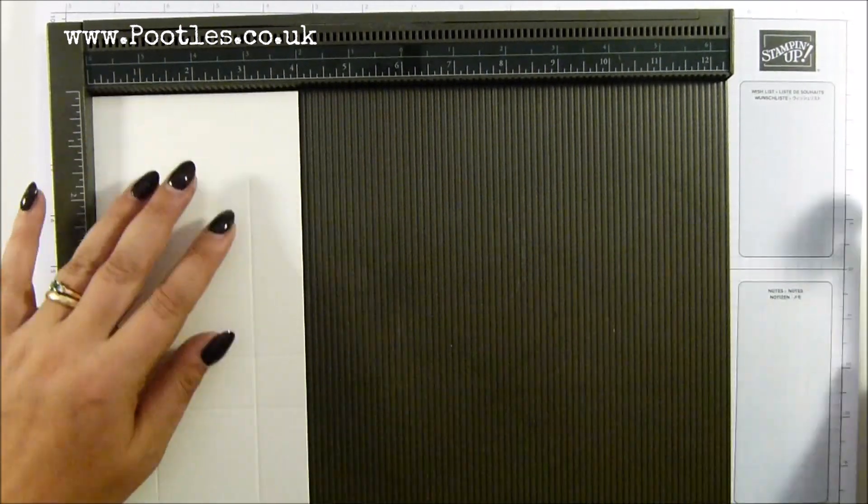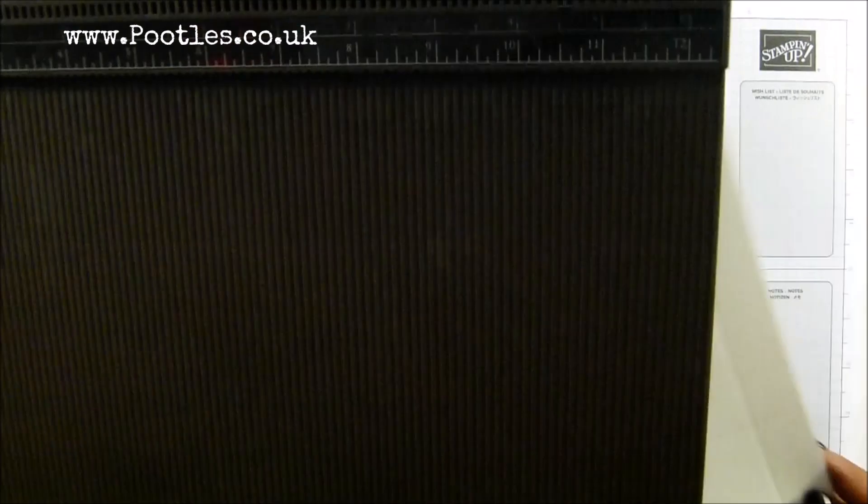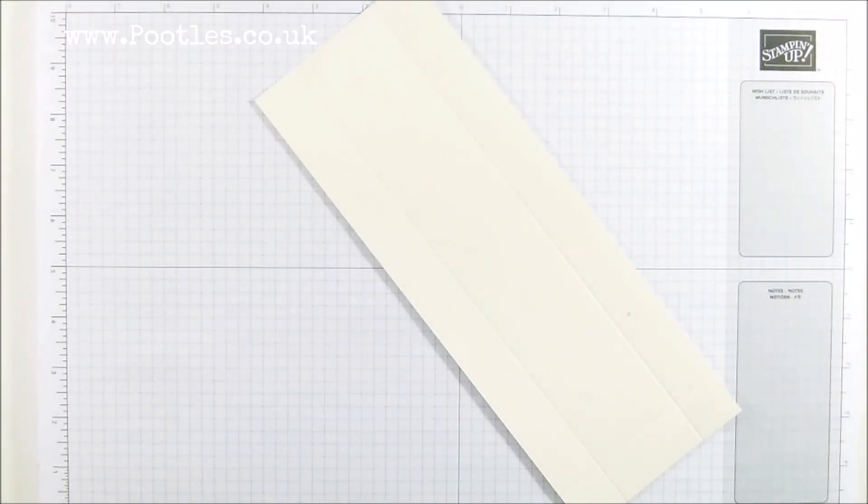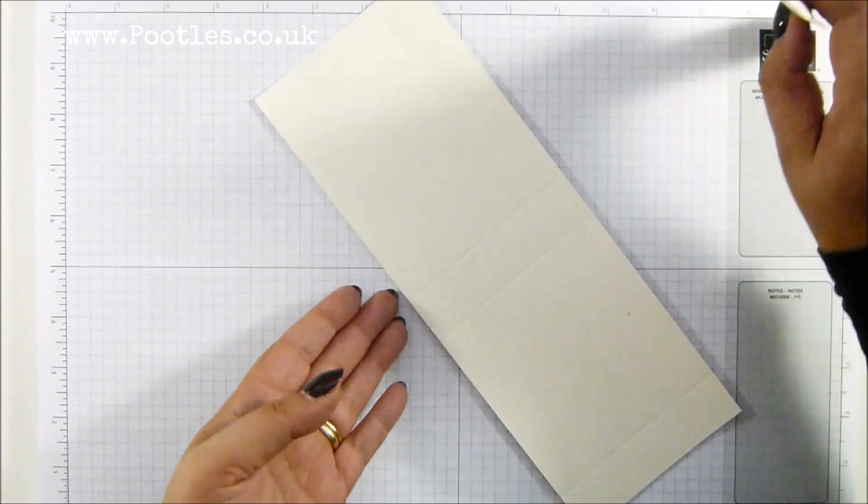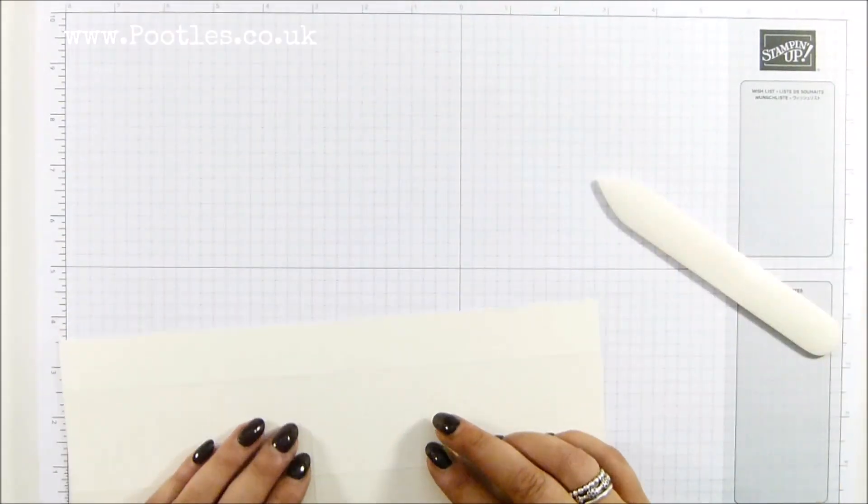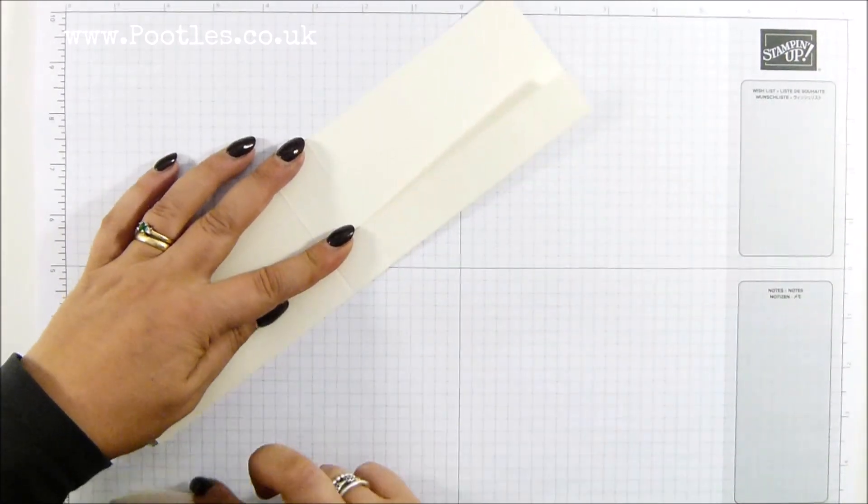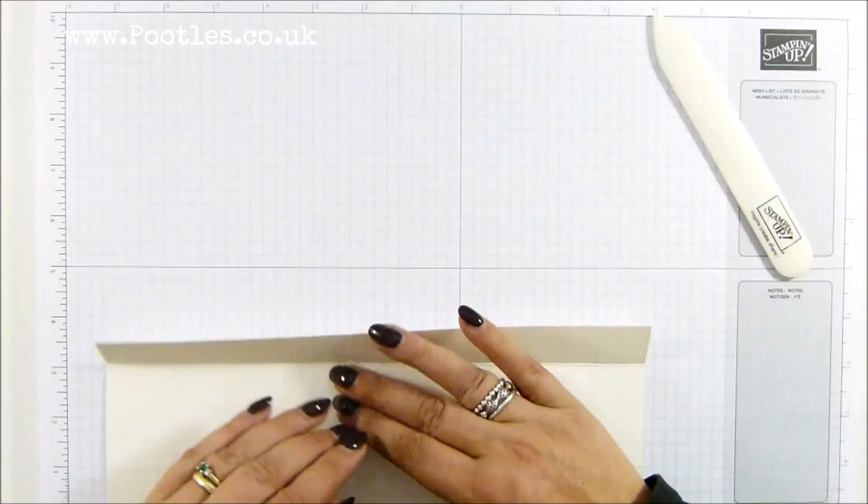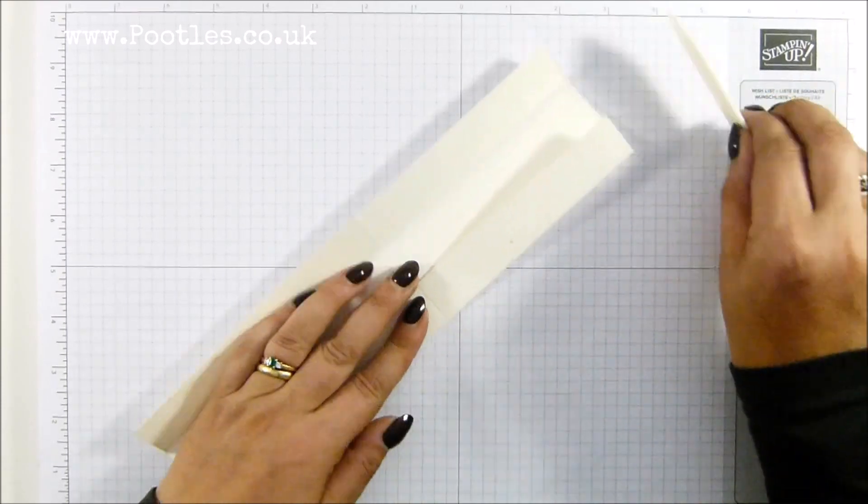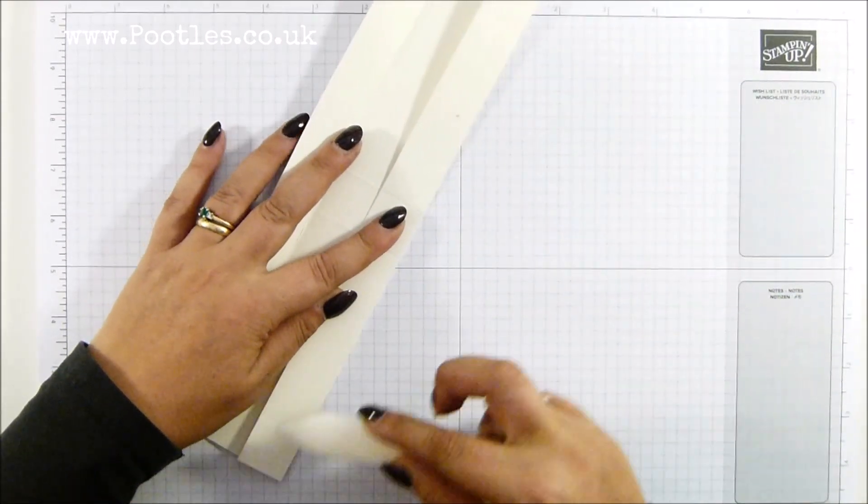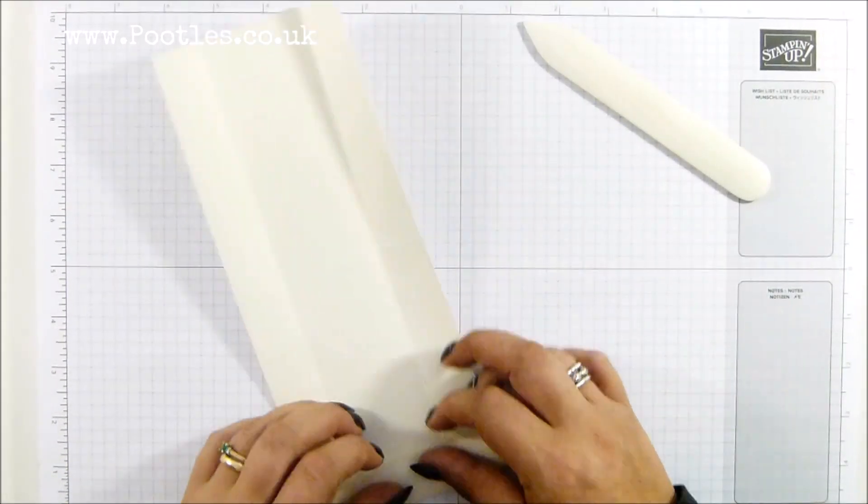I did ask in the team recently who says plaid and who says plad, and it wasn't quite a 50-50 split. I'm not going to say which direction it went in but it did tickle me. It really amused me. So like I say, this is thick. Did I say whisper white? It's not, it's very vanilla, thick very vanilla cardstock. Much better for boxes than our regular very vanilla.